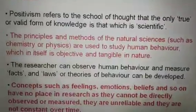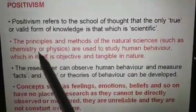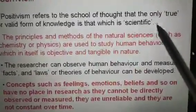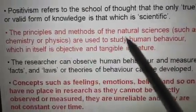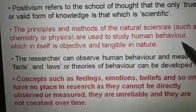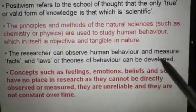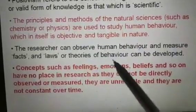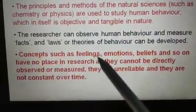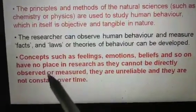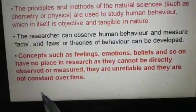Let us also narrate certain characteristics regarding this terminology. Positivism refers to the school of thought that the only true or valid form of knowledge is that which is scientific. The principles and methods of natural science such as chemistry or physics are used to study human behaviour, which is objective and tangible in nature. The researcher can observe human behaviour, measure facts, and laws or theories of behaviour can be developed. Concepts such as feelings, emotions, and beliefs have no place in research as they cannot be directly observed or measured, and they are unreliable and not constant over time.